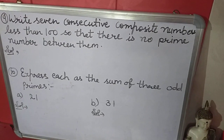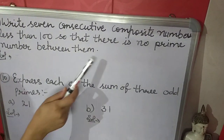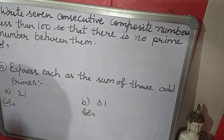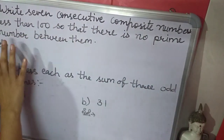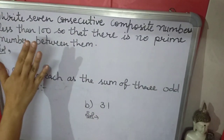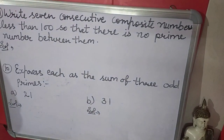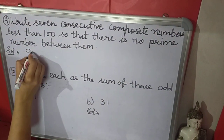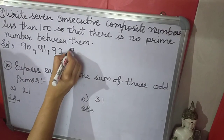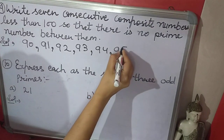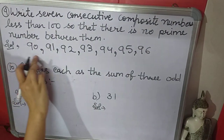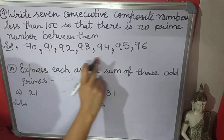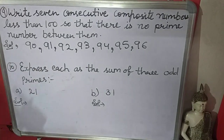The 9th question is: write 7 consecutive composite numbers less than 100 such that there are no prime numbers between them. Consecutive numbers are numbers that come one after another. There is only one series of 7 consecutive composite numbers less than 100. We start from 90: 90, 91, 92, 93, 94, 95, and 96. All these numbers are composite and consecutive, with no prime numbers between them.